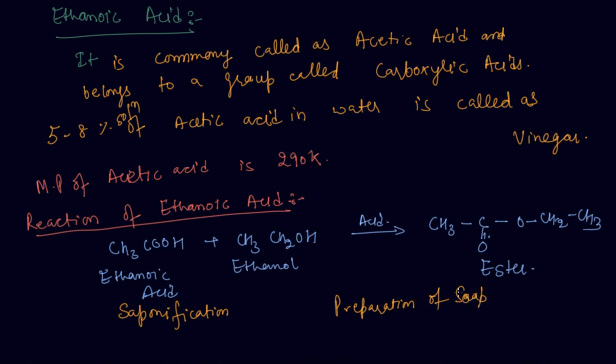So students, we have discussed about the reaction of ethanoic acid with alcohol. Now we will discuss about the reaction of ethanoic acid with NaOH solution. For the reaction with base solution which is NaOH, it gives CH3COONa plus H2O, and this is called as sodium ethanoate.